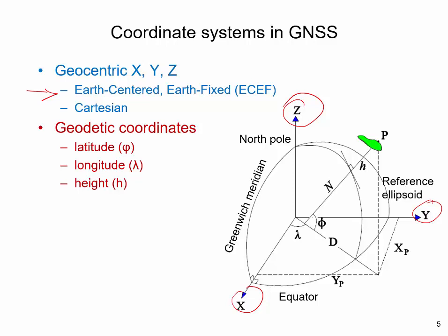the geocentric X, Y, Z coordinates need to be converted to geodetic coordinates of latitude, longitude, and ellipsoid height, which are symbolized by phi, lambda, and H, respectively.